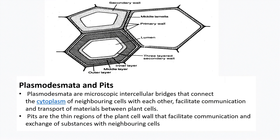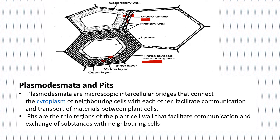Here is another diagram also explaining the structure of cell wall. The middle lamella is the dark line present between two cells. Inside the middle lamella is the primary wall of each cell. As cells get older, there is formation of the secondary wall. In this diagram the secondary wall is a three-layered structure with an inner layer, a middle layer, and an outer layer.